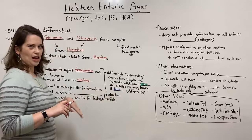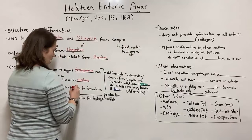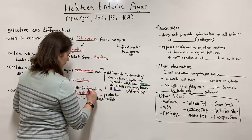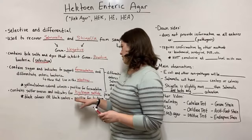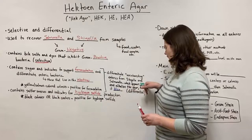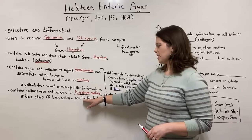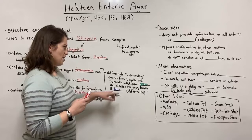Hektoen agar also contains sulfur sources and indicators for hydrogen sulfide production. When hydrogen sulfide is produced, you can get colonies that are entirely black, or colonies that still have the green color but with black centers. Either entirely black colonies or black centers within those green colonies indicate a positive result for hydrogen sulfide production. This is a way that Salmonella and Shigella can be differentiated from each other.